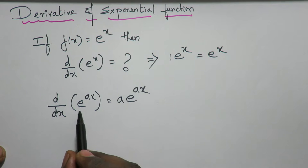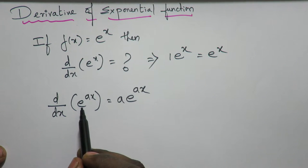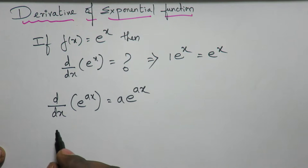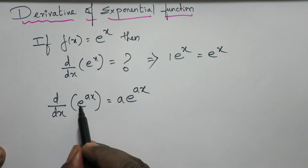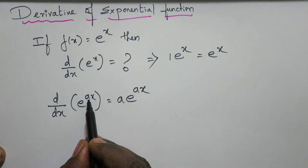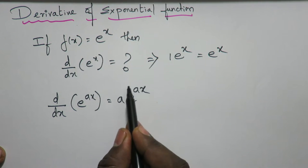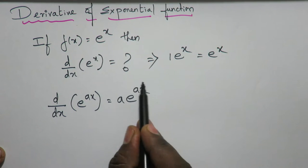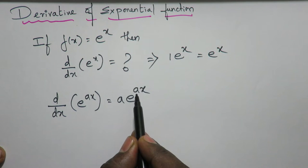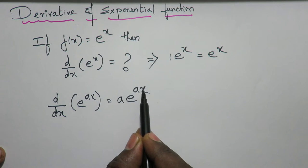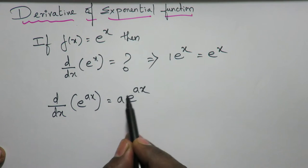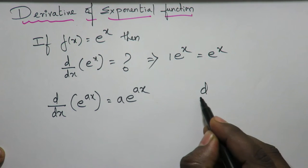Now come to this formula. Whenever you get a problem like this with exponential function, it is very simple. For e^ax, write e^ax as it is, then differentiate ax. When you differentiate ax, what is it? It is a, because a is a constant multiplied by variable x. So keep the constant as it is.